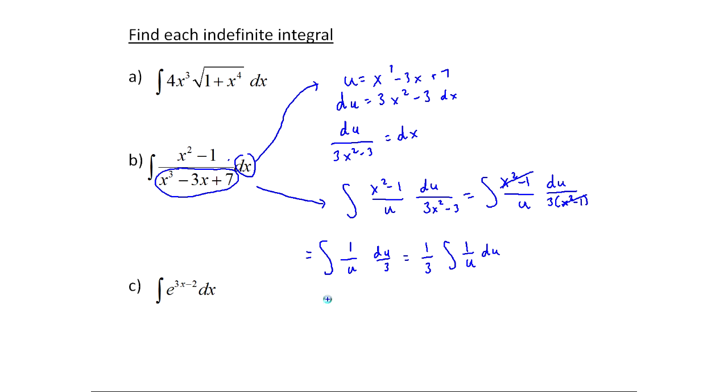So this is a one-third times the integral of 1 over u du. Now it's a much more simple integral, right? Because we know automatically this is one-third and the integral of 1 over u is ln absolute value of u plus c. And now all I got to do is replace in the stuff I set u equal to, which is one-third ln absolute value x cubed minus 3x plus 7. And don't forget your plus c. So once again, all this algebra work and all this substitution work up here allowed me to simplify things down and make it a much easier integral to solve for.